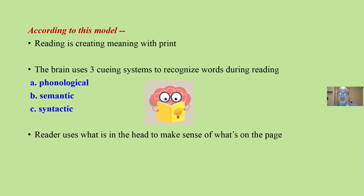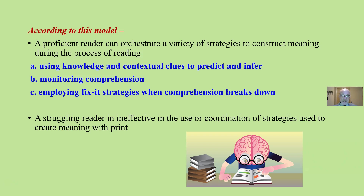Our brain uses three cueing systems to recognize words. To recognize a word, you see it and think, oh, I know what you are. Those systems are the phonological, the semantic, and the syntactic. According to the phonological model, you only use the phonological system. So the reader uses what's in the head to understand and make sense of what is on the page — we read with our brains. According to this model, a proficient reader can orchestrate a variety of strategies to construct meaning, not just to sound out words.